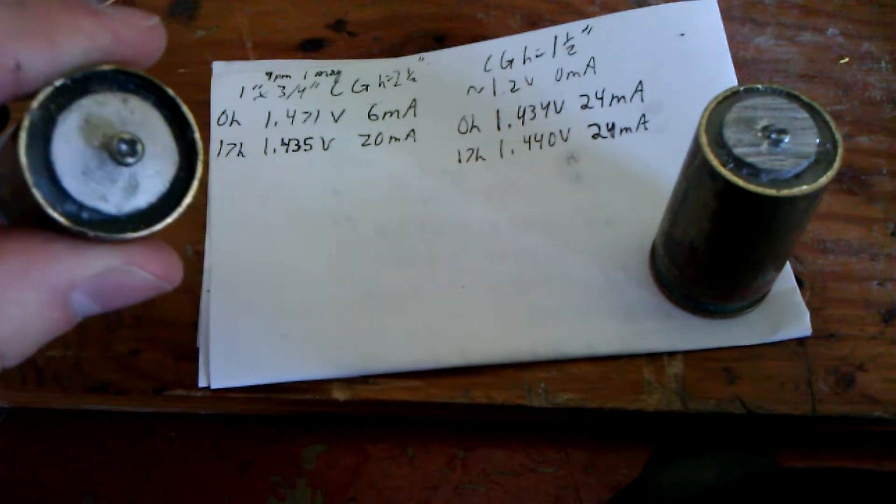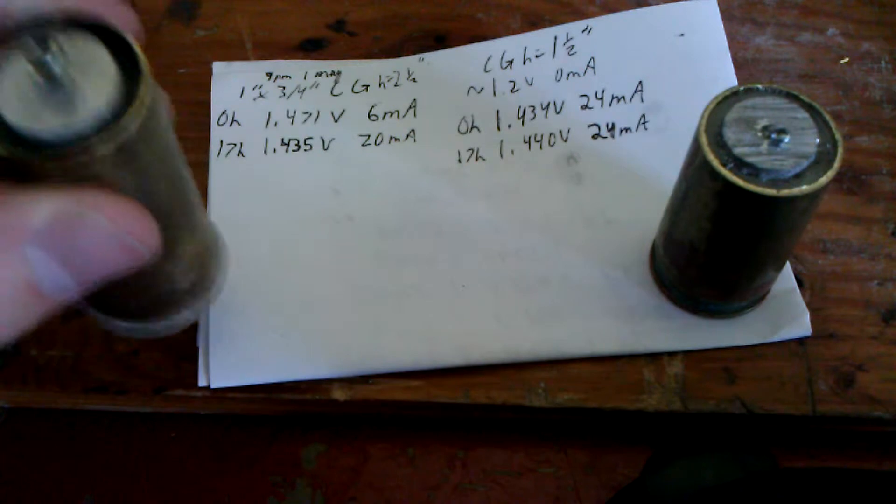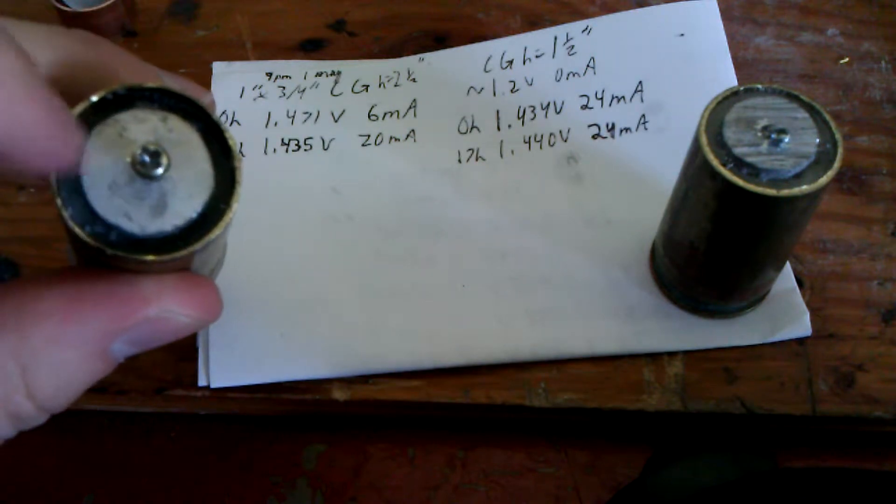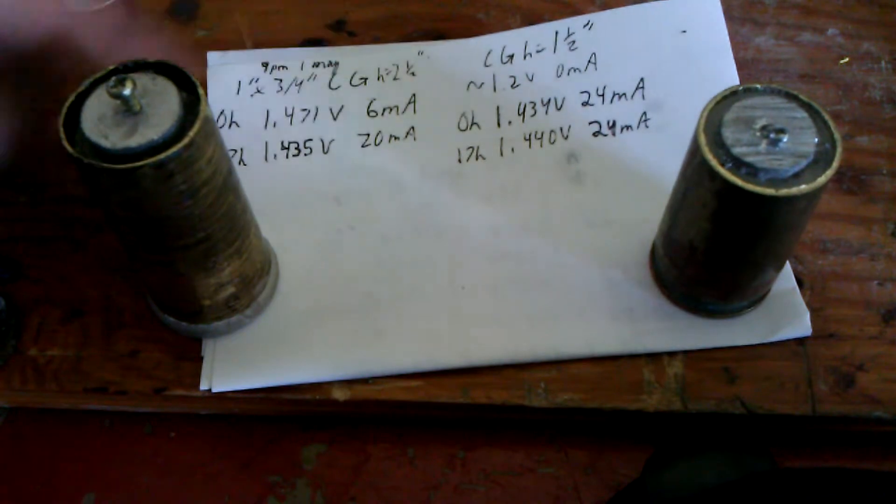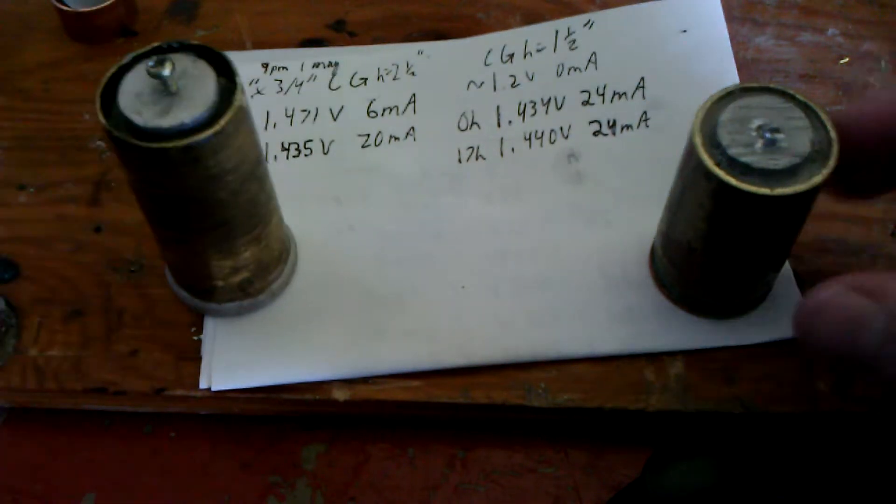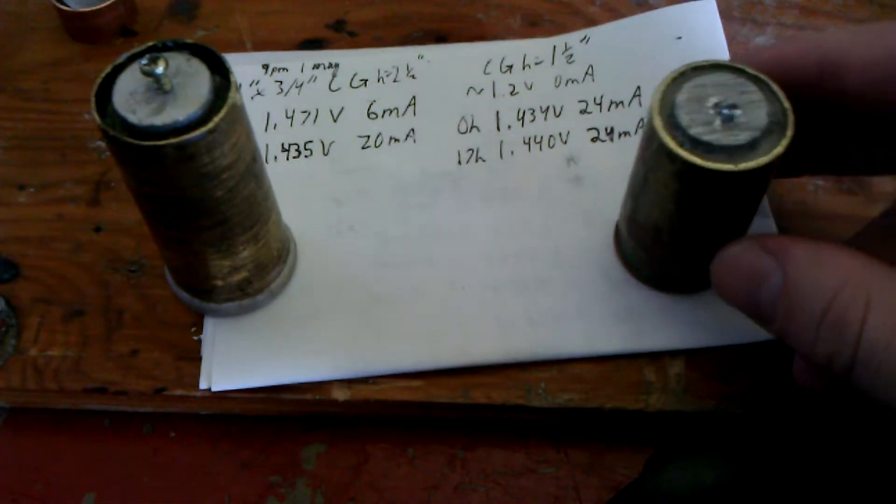So one inch diameter brass, three quarter inch diameter magnesium core, and this one is two and a half inches in height, and this one is one and a half inches in height.